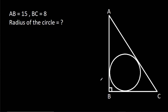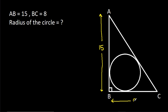In this video, we have been given a right angle triangle in which AB is 15 and BC is 8, and we have to find the radius of the inscribed circle.